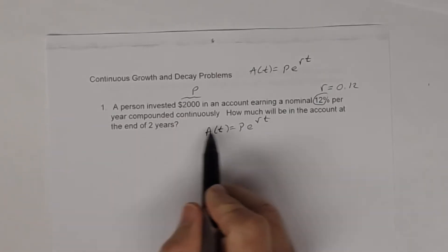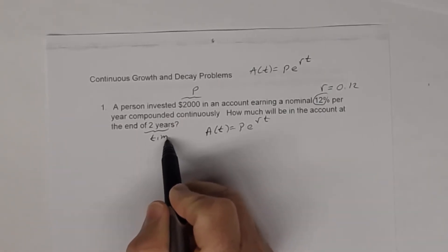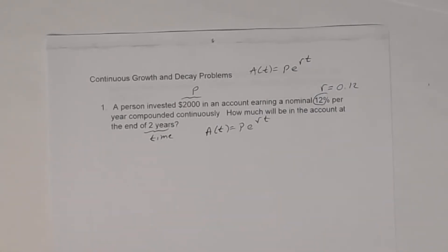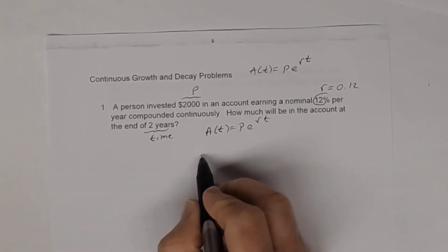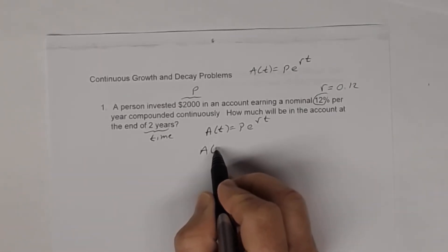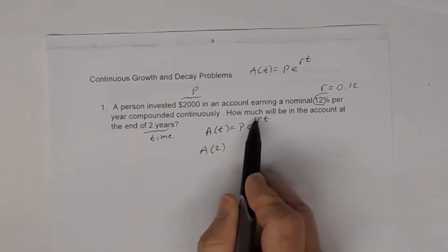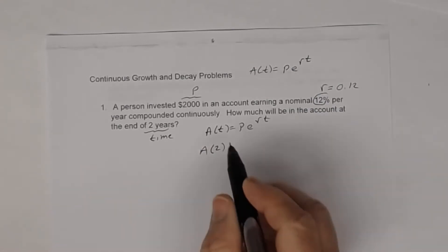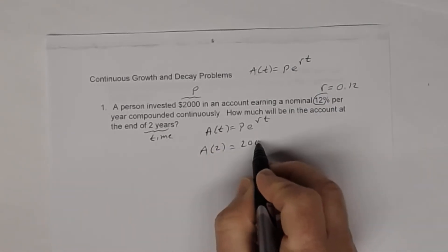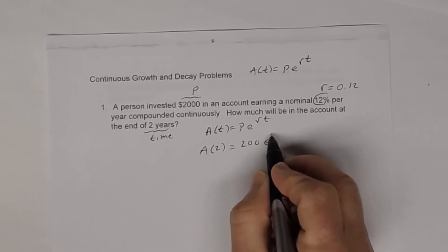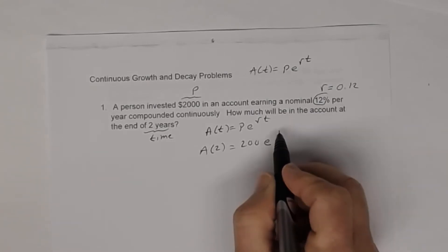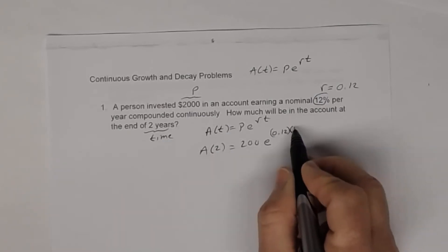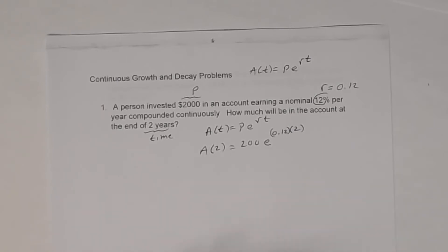The time is at the end of two years. Notice it says 'per year,' so make sure your time is in years. So A(2) — the amount at the end of two years — equals 2,000 times e raised to the exponent 0.12 times 2.